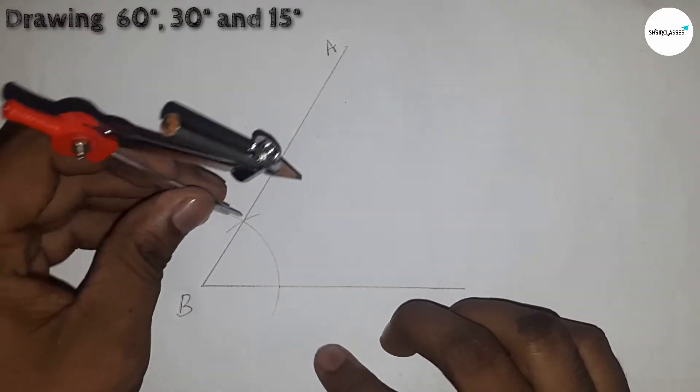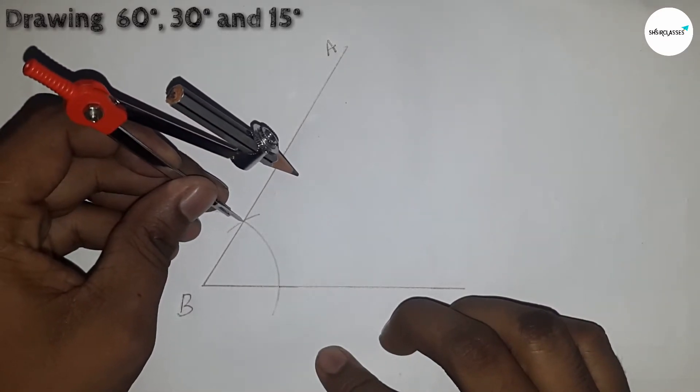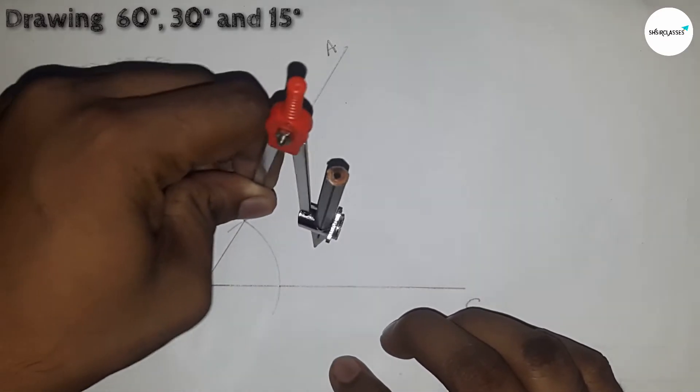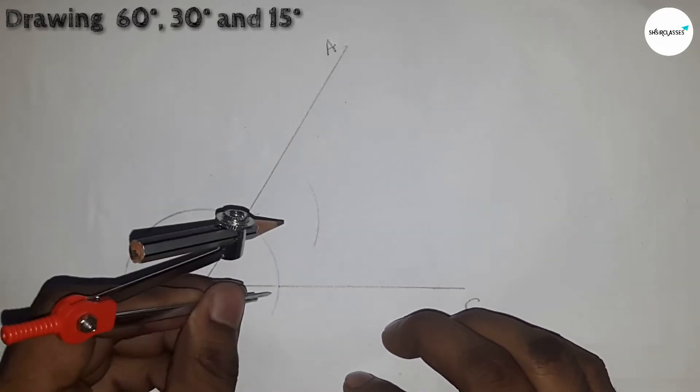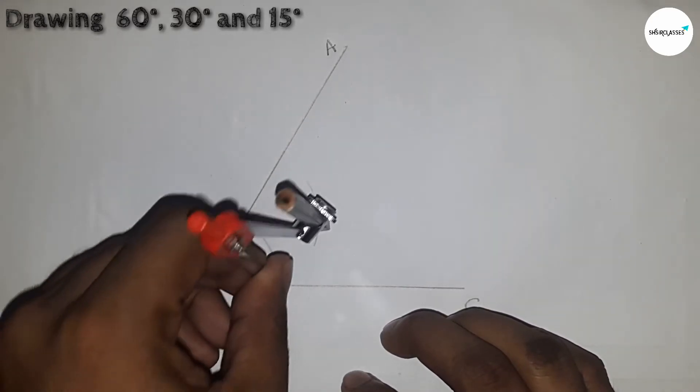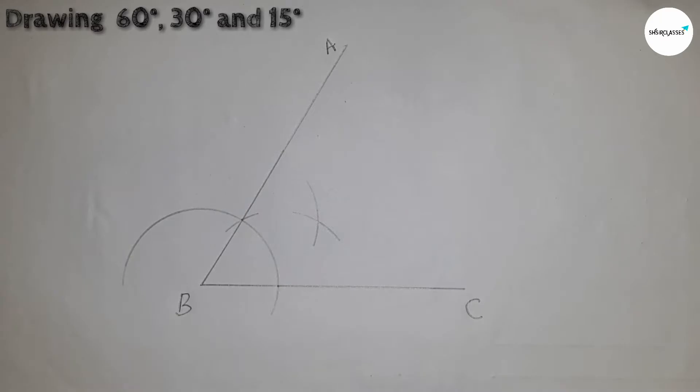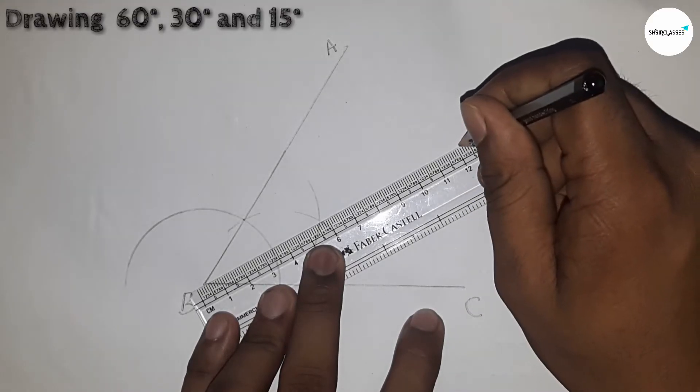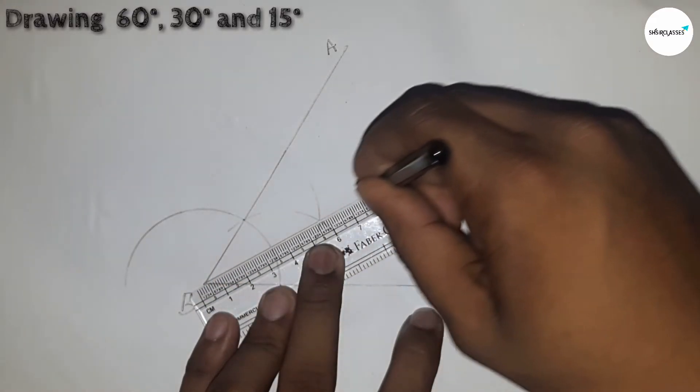Now again with same radius and putting the compass here and drawing an arc by this way. And again putting here and cut the arc. Now joining these two points.